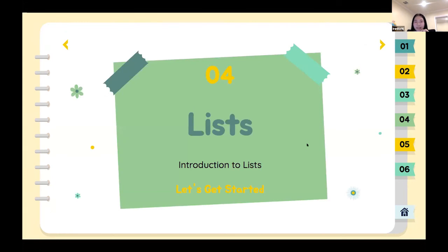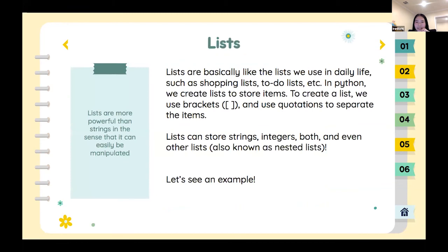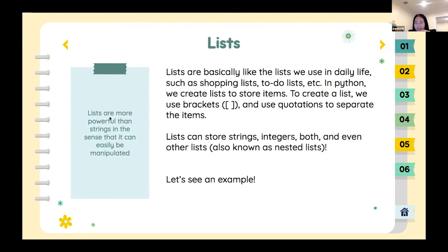Our new concept today is lists. Lists are just like the lists we use in everyday life — shopping lists, to-do lists, et cetera. In Python we can create lists to store items, and most of the time they're items grouped together, though you can also store random things. To create a list we use brackets, then quotation marks and commas to separate items. Lists can store strings, integers, both, and even other lists — lists inside lists are called nested lists.